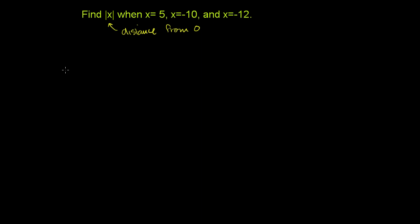So let me just draw a fast number line over here. Let's just put 0 right over here, since we're thinking about the distance from 0. So let's just think about the absolute value of x when x is equal to 5. So that's equivalent to the absolute value of 5. We just substituted 5 for x.